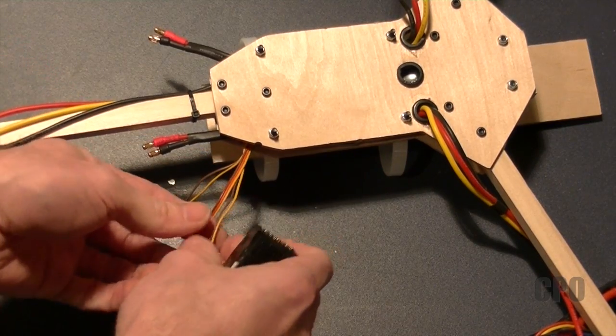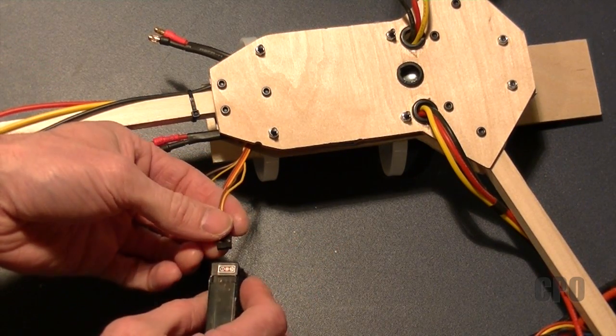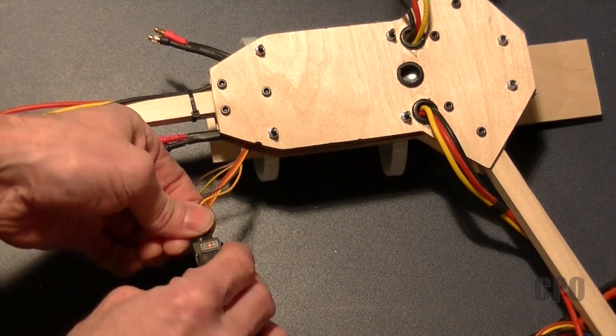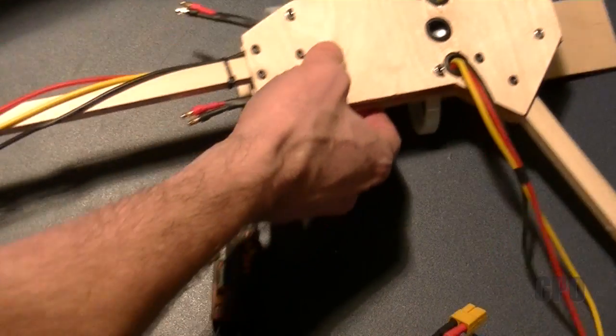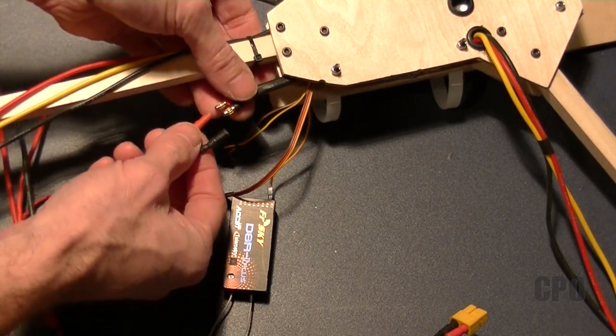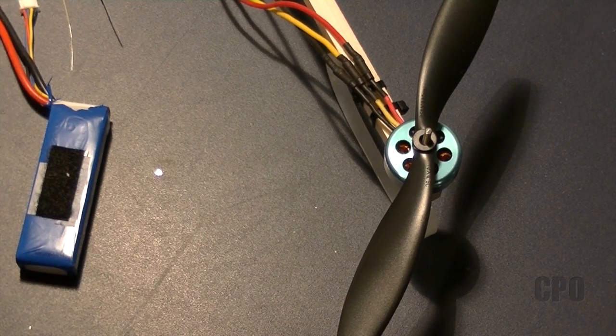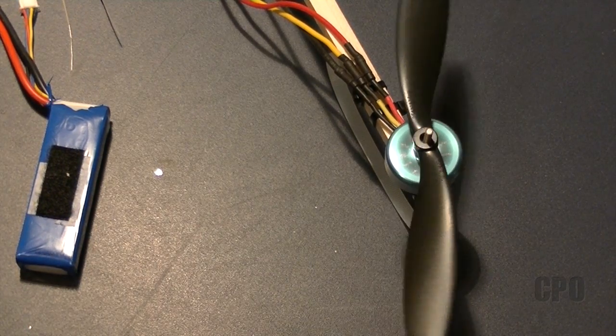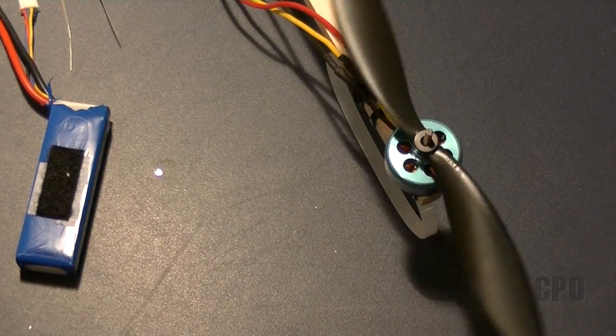Just like before, I'll be plugging the ESC into the receiver directly. And this one does not have the BEC wire, so I will need my external BEC for this, and also the power wires for the ESC from the battery. This one should spin counterclockwise just like the tail motor, and it does. So we're all good to go there.